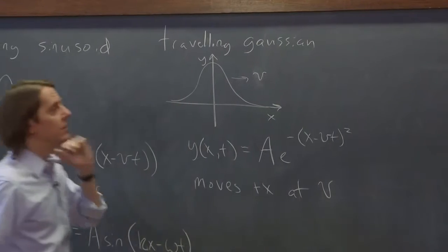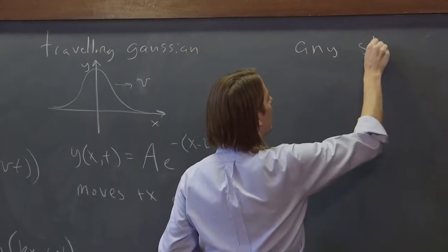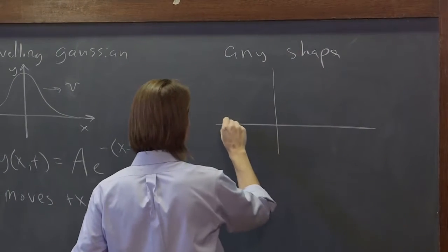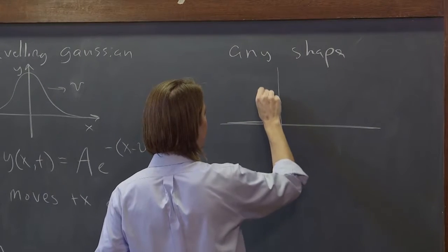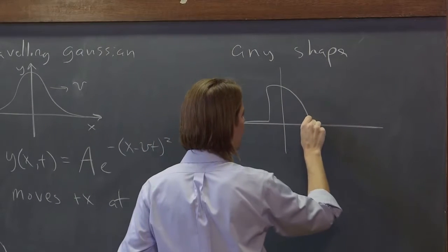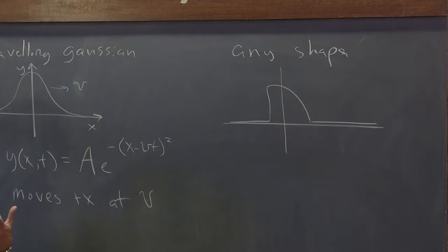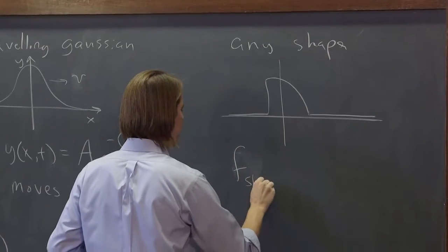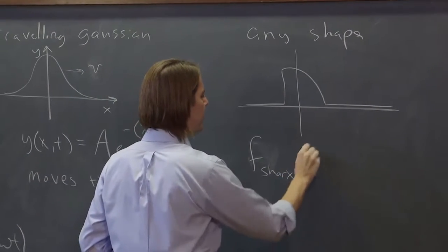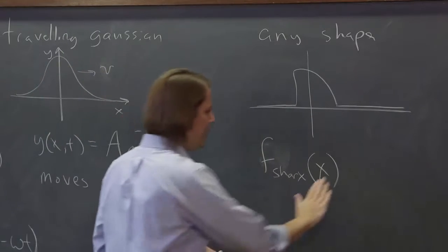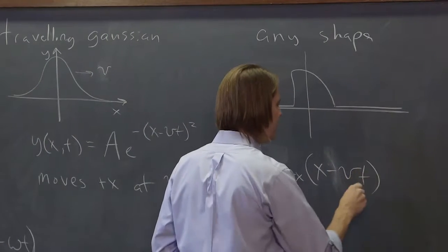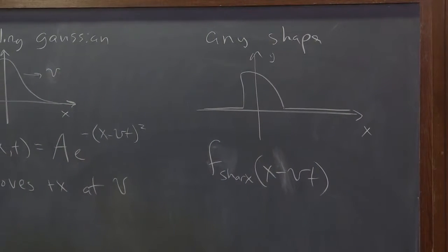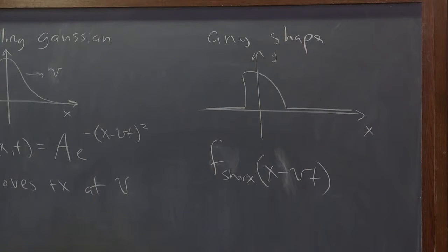And really, it's any shape. So if we had some dramatic shark music playing right now, which we probably don't want to pay for the copyright for, maybe you have like a shark fin function. If you had written the function f shark as a function of x to describe this shark fin creeping along the x-axis, if you just write it minus vt, you can have the shark fin moving along. Any function you write, f of x minus vt.